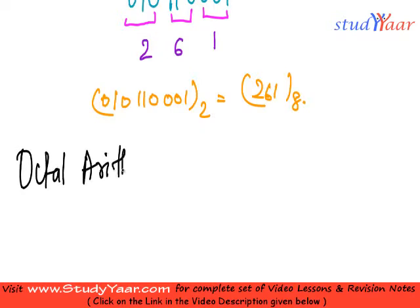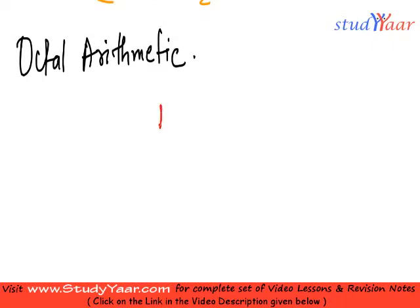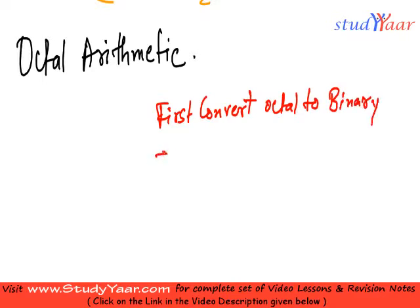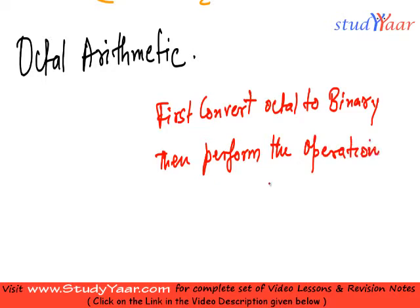And as I was telling you, there is nothing to be understood over here because in octal arithmetic, what we do is let's first convert octal to binary and then we perform the operation in binary. So if you know binary arithmetic, you know octal arithmetic. Form the operation in binary. There is nothing new over here.